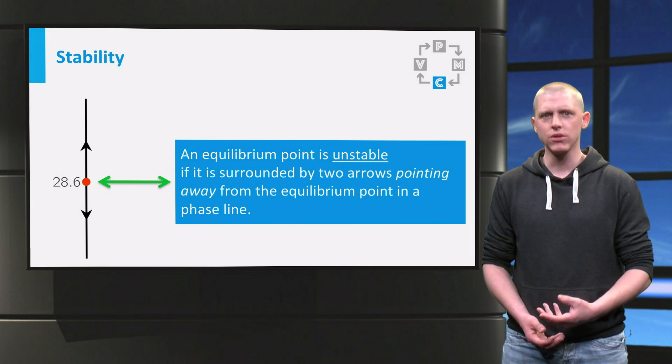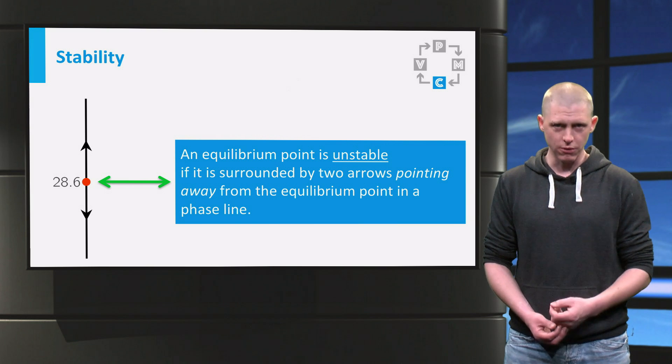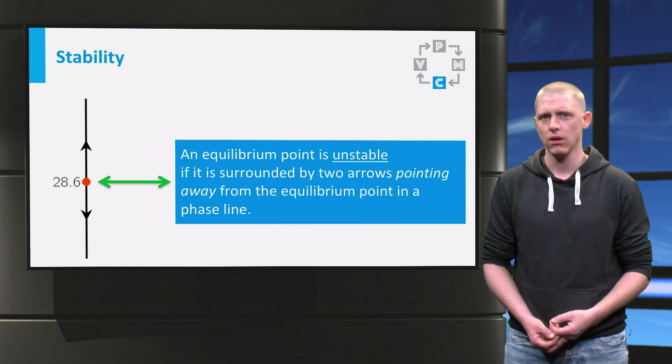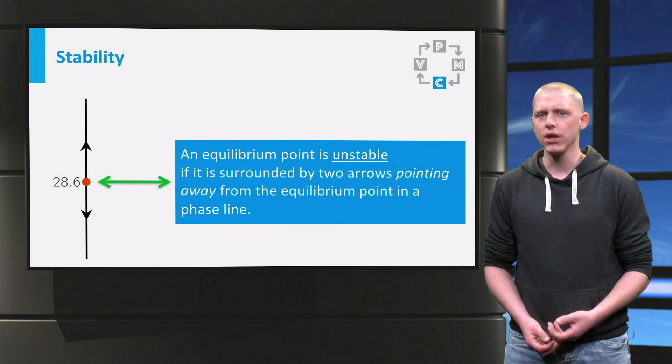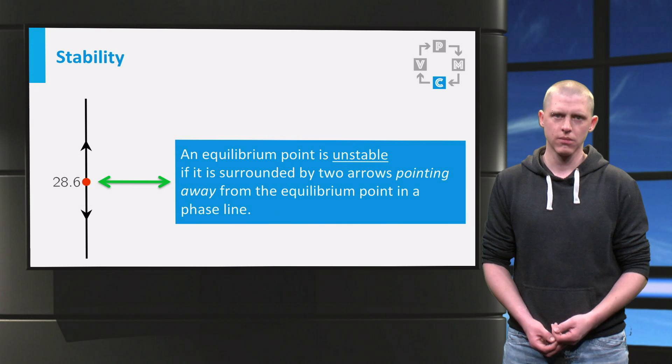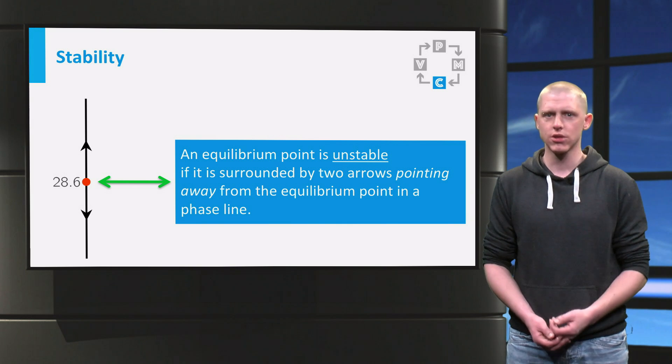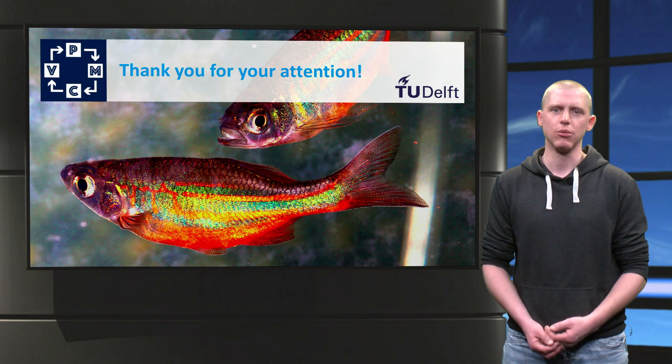So you now have found that a population of 28.6 rainbow fish is unstable. Of course, other types of equilibria exist, but these you will encounter in a different part of this course. In the next exercises, you will construct a phase line yourself and classify the equilibrium points.